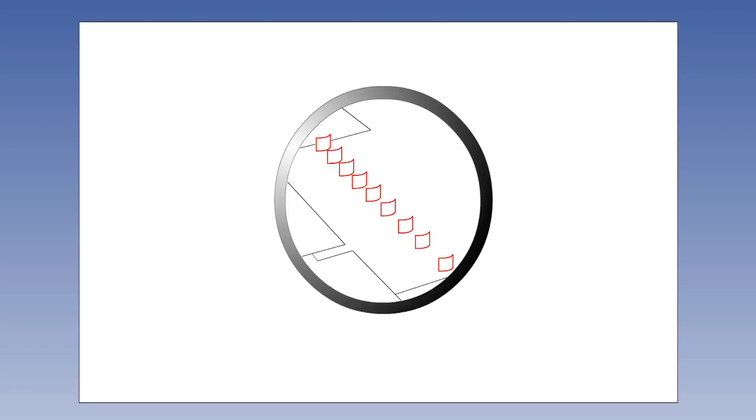They each generate a small vortex which causes the free stream flow of high energy air to mix with and add kinetic energy to the boundary layer delaying separation.